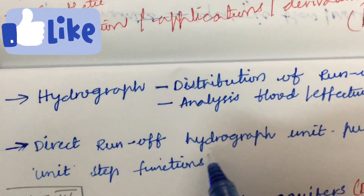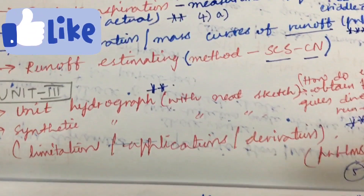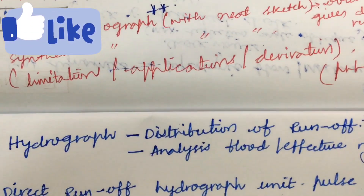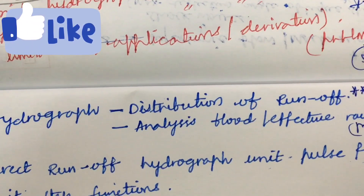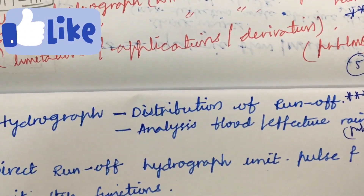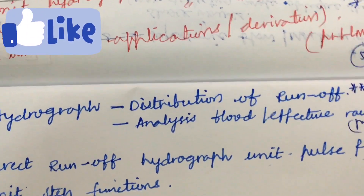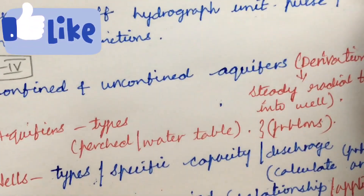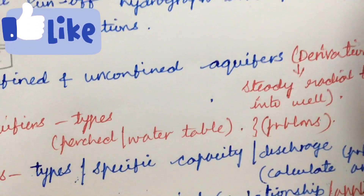Later, the direct runoff hydrograph, unit pulse, and unit step functions are also important. From Unit 3, we can expect two questions or sometimes one and a half questions, and one and a half questions from Unit 4, or two from Unit 3 and one from Unit 4. Make sure to cover all these concepts — the course is about 70 percent theory and 30 percent derivations and problems.